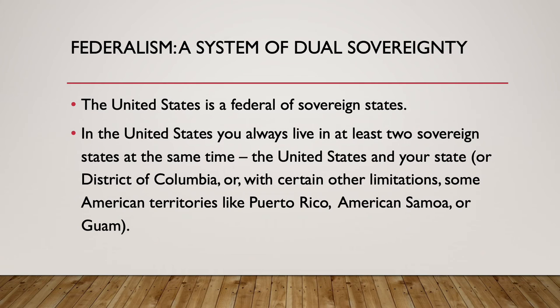Federalism, as we have in the United States, is a system of dual sovereignty. In the U.S., you always live in two sovereign states at the same time — the United States and your state, or the District of Columbia, or with certain limitations, some of the other American territories like Puerto Rico, American Samoa, or Guam.